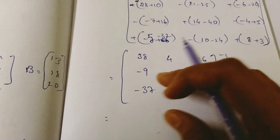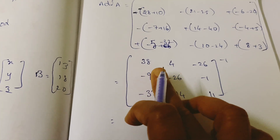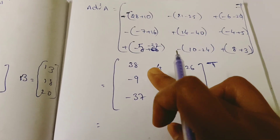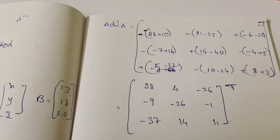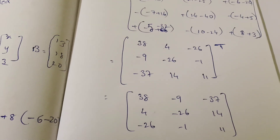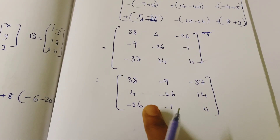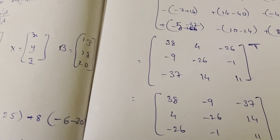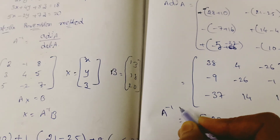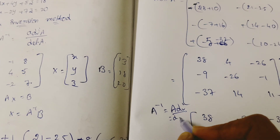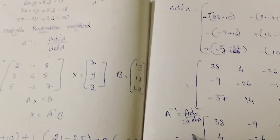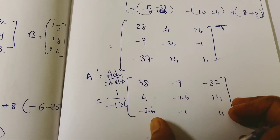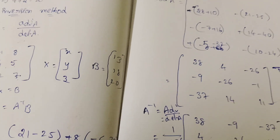Now A inverse equals 1 divided by minus 136, times the adjoint matrix. We write X equal to A inverse into B.